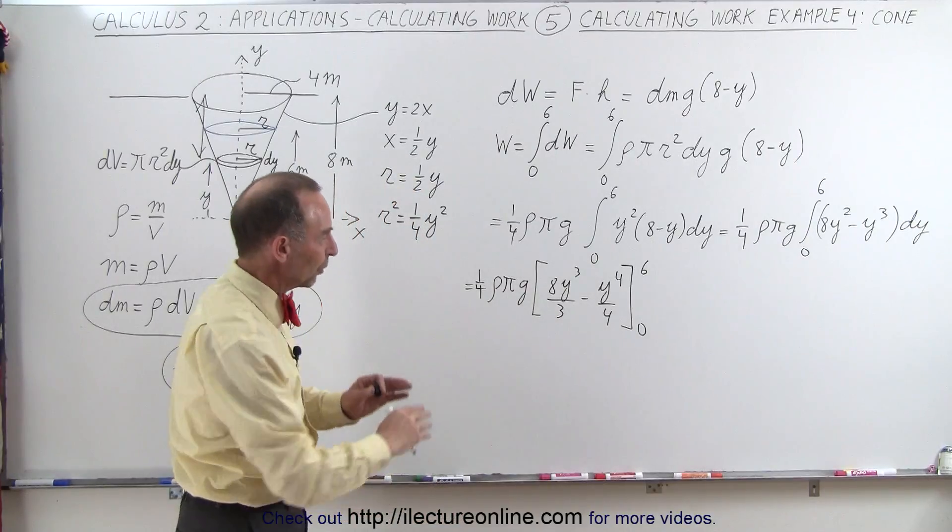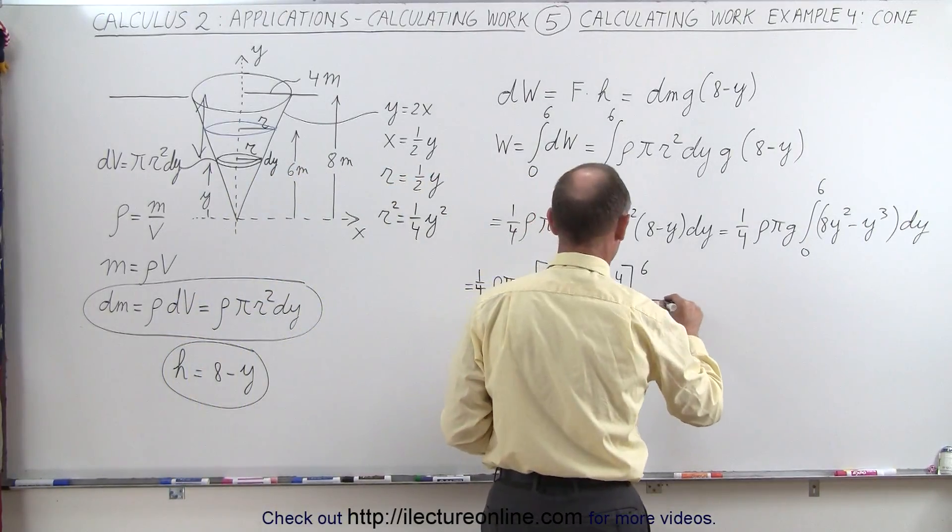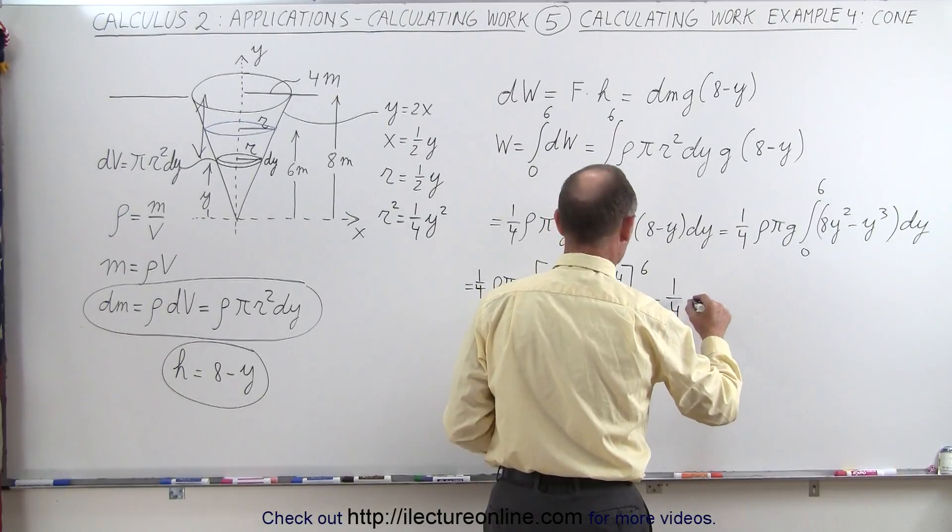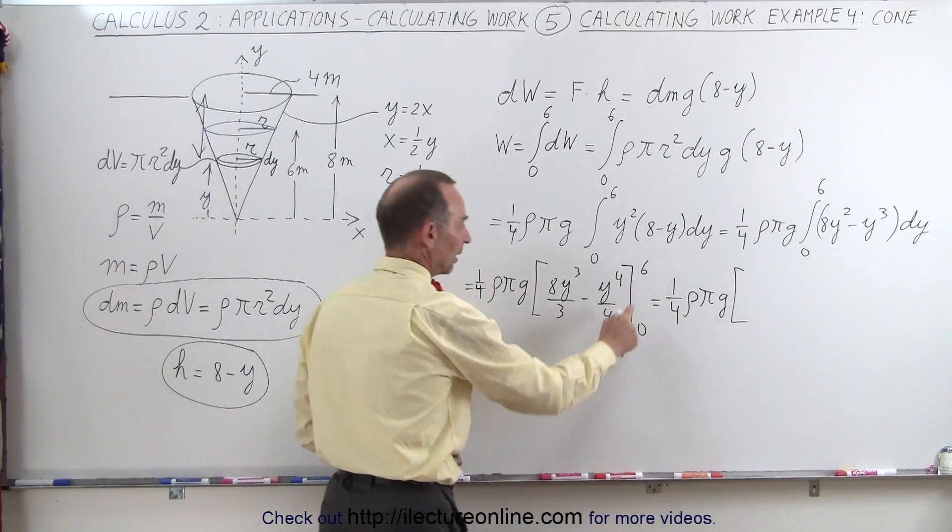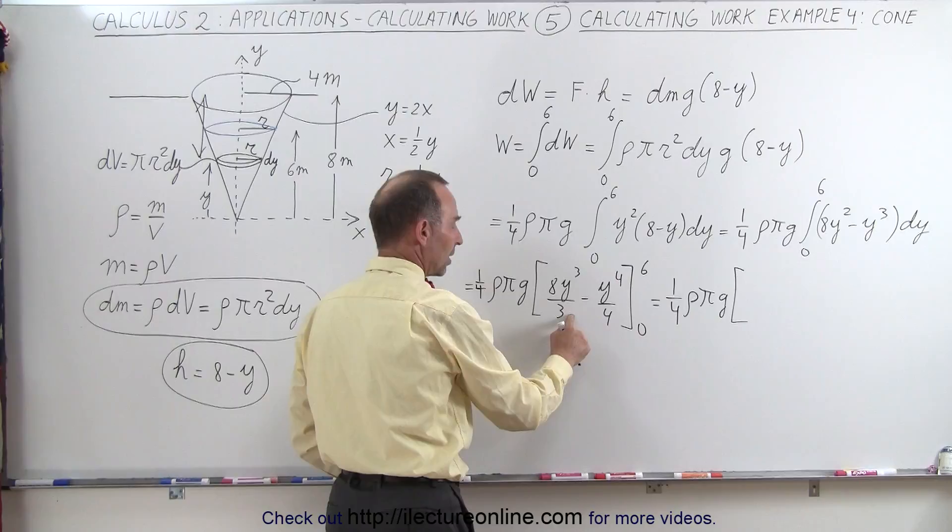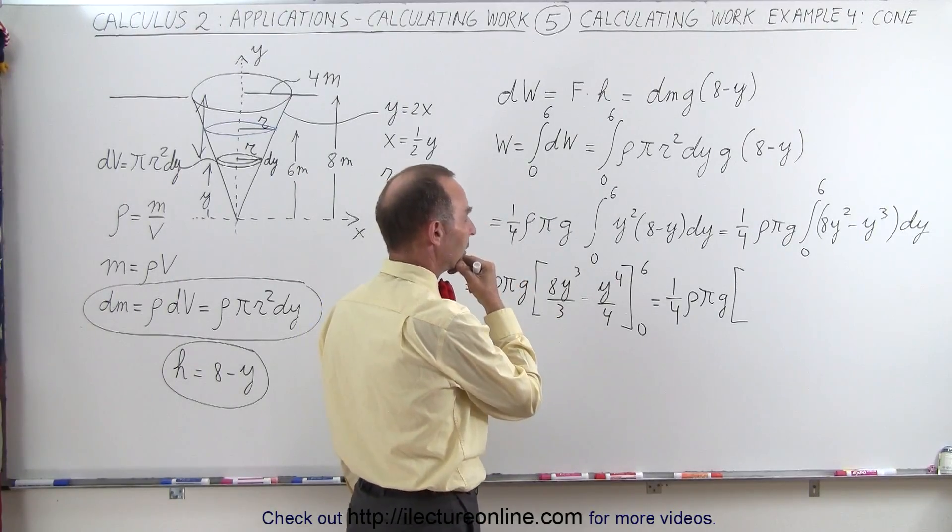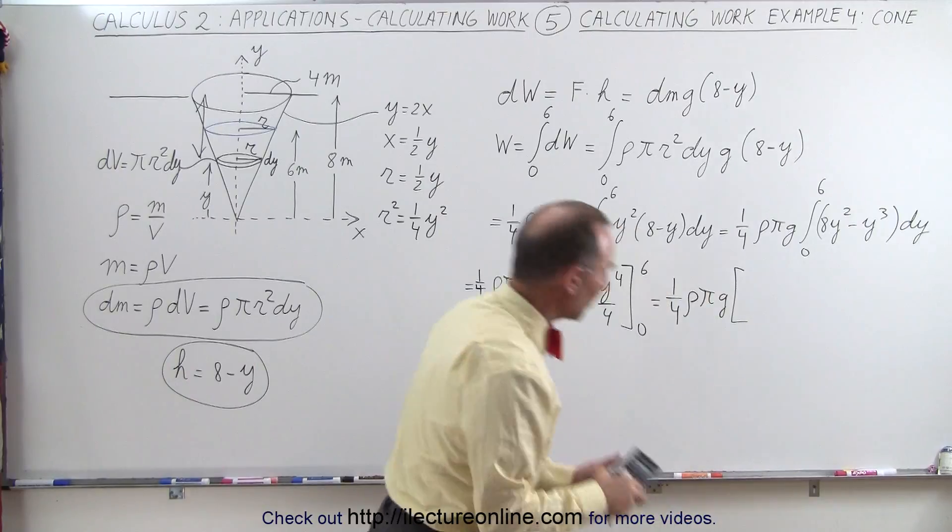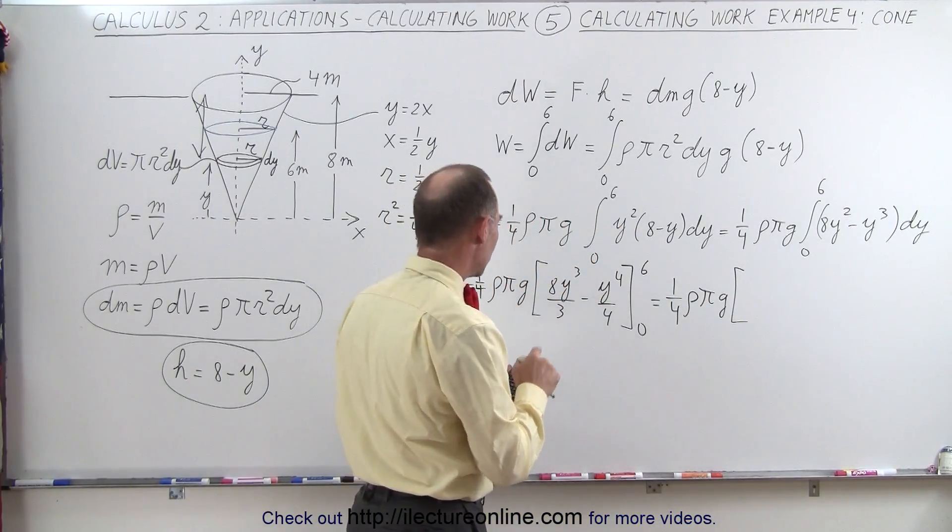Of course when we plug in the lower limit we get nothing, but when we plug in the upper limit we get the following. So this is equal to one quarter times density pi g times. Plugging in the upper limit we get 6 cubed divided by 3. Now 6 cubed is 216 divided by 3 is, let's see here, let's make it a little bit easier. So 216 divided by 3 is 72 times 8.